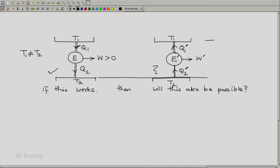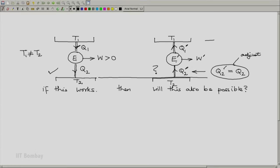What we do is we say let Q2 prime be adjusted in such a way that Q2 prime equals Q2. Remember that we assume that all our interactions are continuous and are scale independent. So I can always scale this engine up or down as required to adjust Q2 prime equal to the Q2 of the first engine E. And obviously W prime and Q1 prime will automatically get adjusted as required when Q2 prime is adjusted equal to Q2.